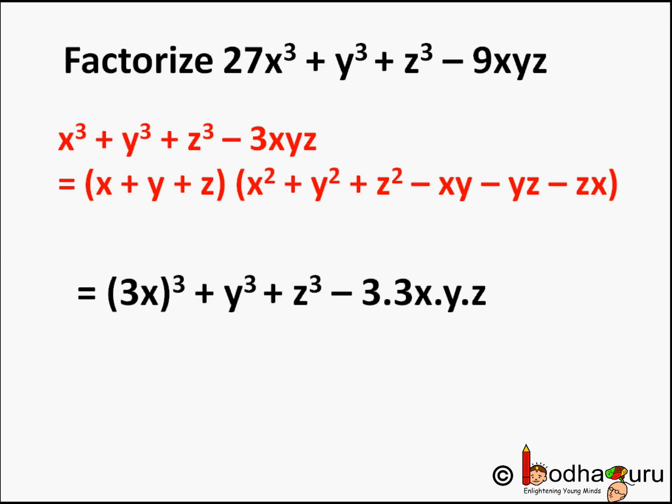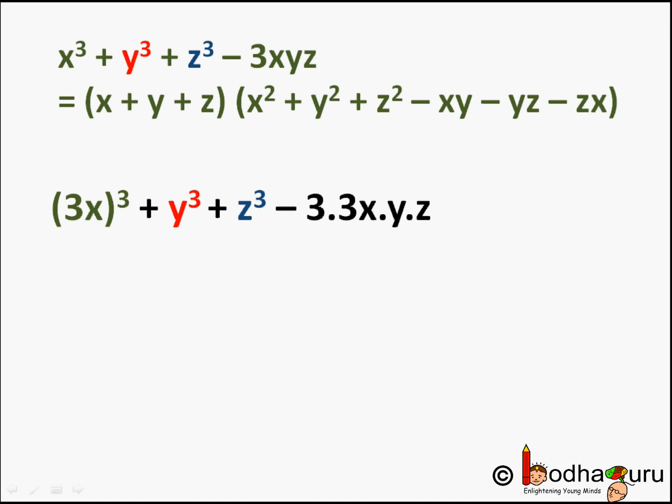So we get (3x + y + z) as the first factor, because 3x is the first term, y is the second, and z is the third. So instead of x, it is 3x here.